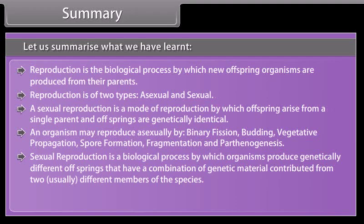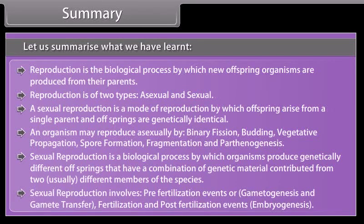Sexual reproduction is a biological process by which organisms produce genetically different offsprings that have a combination of genetic material contributed from two usually different members of the species. Sexual reproduction involves pre-fertilization events — gametogenesis and gamete transfer — fertilization, and post-fertilization events, including embryogenesis.